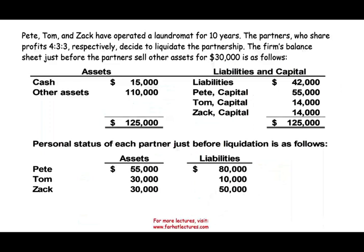So in this example, we would look at a simple liquidation example to illustrate the point of simple liquidation. We have three partners — Pete, Tom, and Zach — who have operated a laundromat for 10 years. The partners share the profit four to three to three, respectively, and they decided to liquidate the partnership.